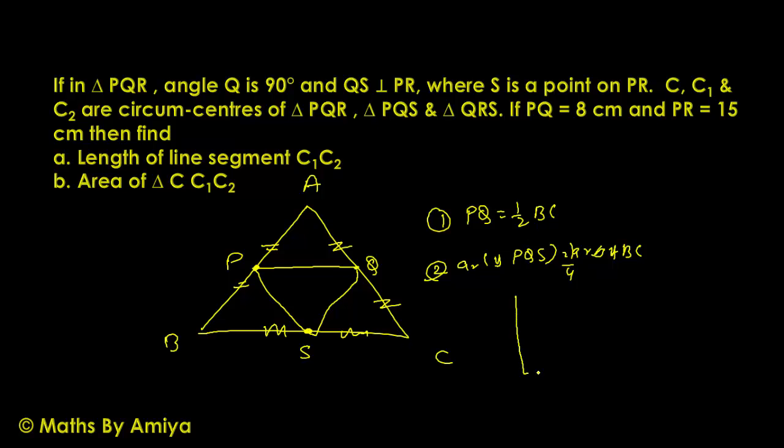And last concept: if we have a right angle triangle, then circumcenter is nothing but the midpoint of hypotenuse. I hope you know all these three concepts. Now use these three concepts in our question.